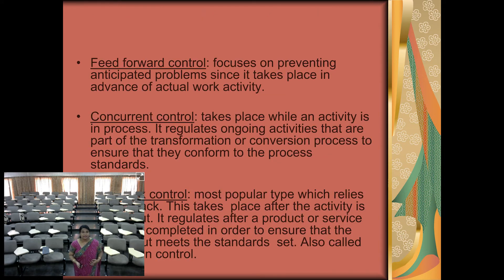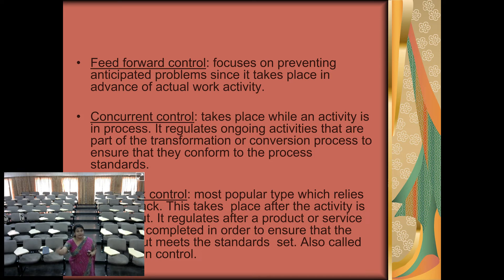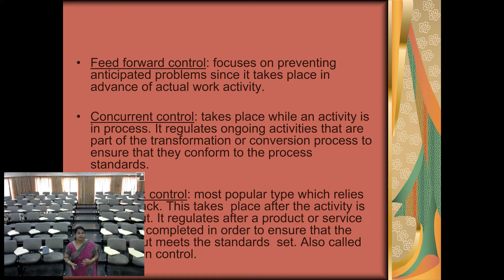The first type of control is feed forward control. It focuses on preventing anticipated problems since it takes place in advance of actual work activity. For example, I am taking a class and I want my delivery to be very good. So before I start the class, I will select a place where there is no disturbance. That is feed forward control — anticipating problems and taking preventive measures so they will not become a barrier when work begins.